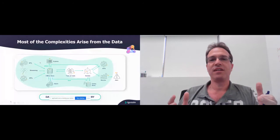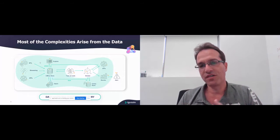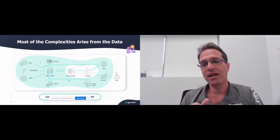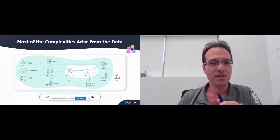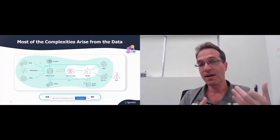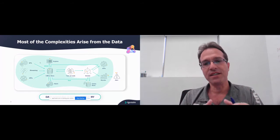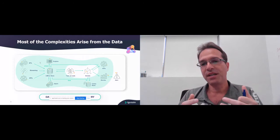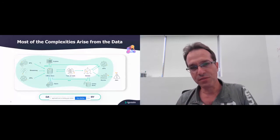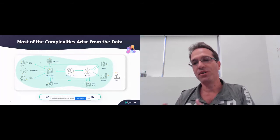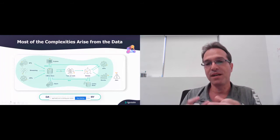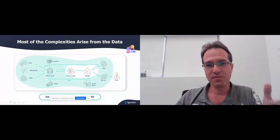When you think about this pipeline and the challenges in creating it, you can see that most of the complexities arise from the data. You need to get data from different sources, the data scientist needs to transform that raw data into features that can fit a model, and then you still need to make sure the data going to the model in production is correct. Everything has to do with data, and most of the challenges are around handling data within the machine learning pipeline.